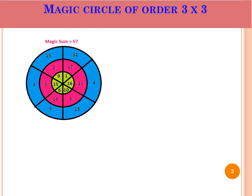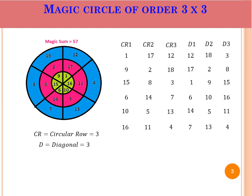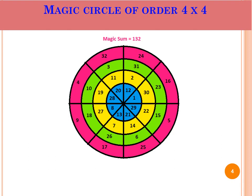Similarly, we have a 3 cross 3 magic circle, which has 3 circular rows and 3 diagonals, each one having sum 57. And the 4 cross 4 has 4 circular rows and 4 diagonals, each one having magic sum 132.